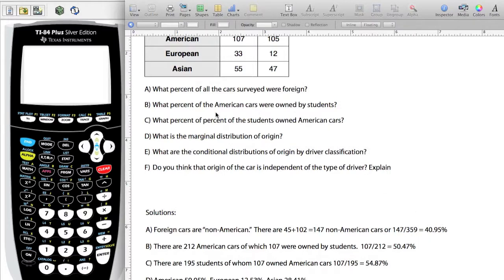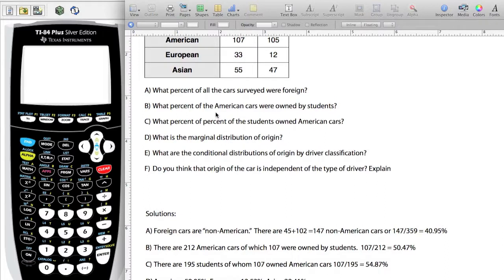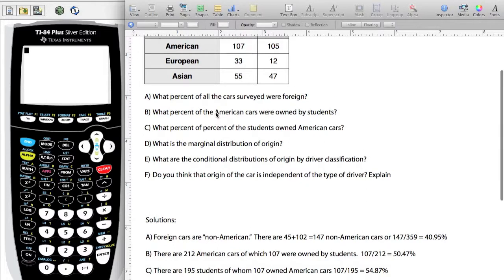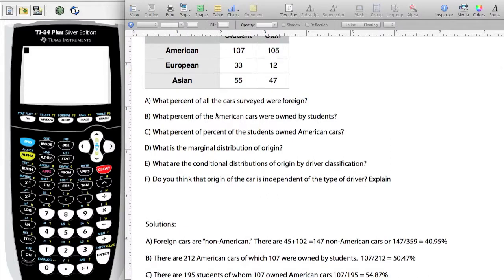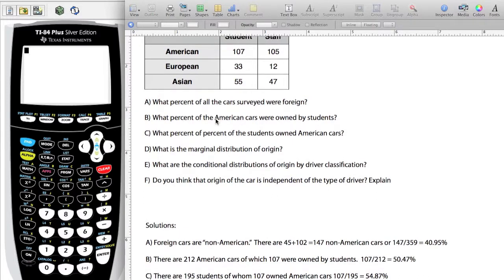The next question says, what percentage of American cars were owned by students? Now it's giving you a condition. I'm not interested in the foreign cars, I want to know about the American cars. So now we're looking at just the row of Americans. We want to know out of 212, what percent were owned by students. 107 out of 212, that's 50.47%.